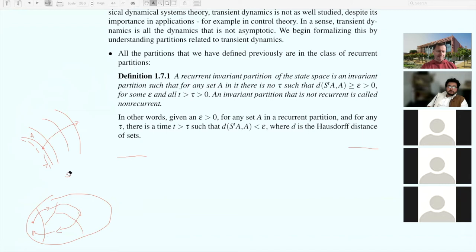You go from here to here, from here to here, and you come back exactly to the initial set you started from. So for any epsilon you want, the distance between your original set and S_T A is exactly zero. A non-recurrent invariant partition is one that doesn't have this property—we just move away from that initial set A and never return.